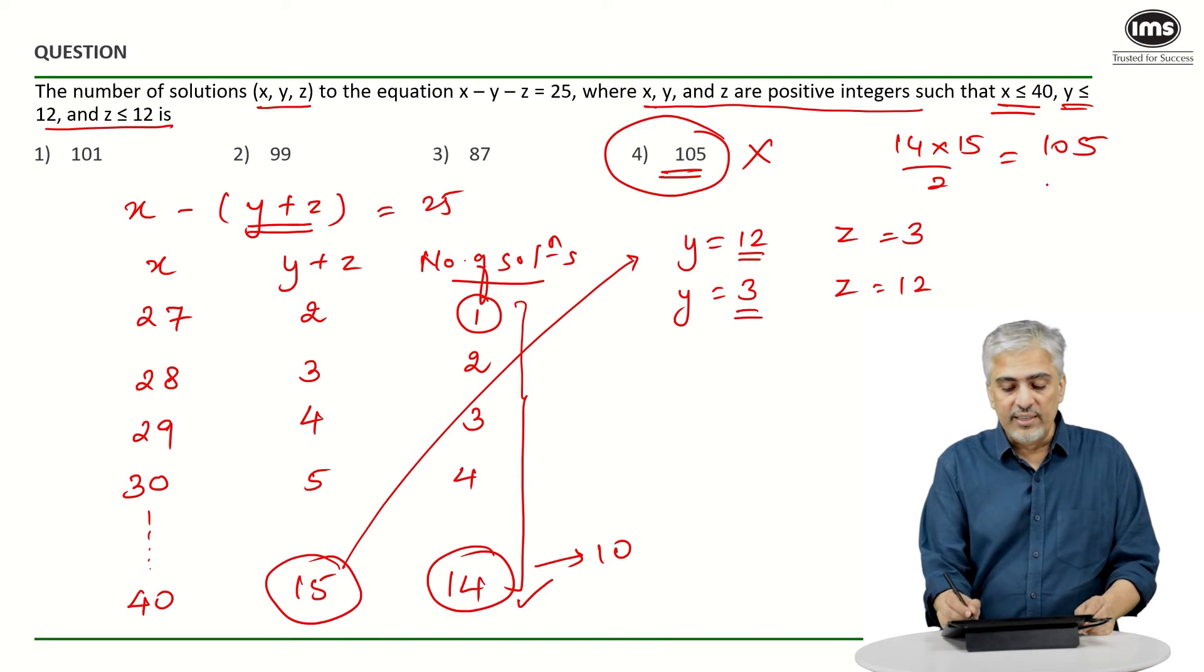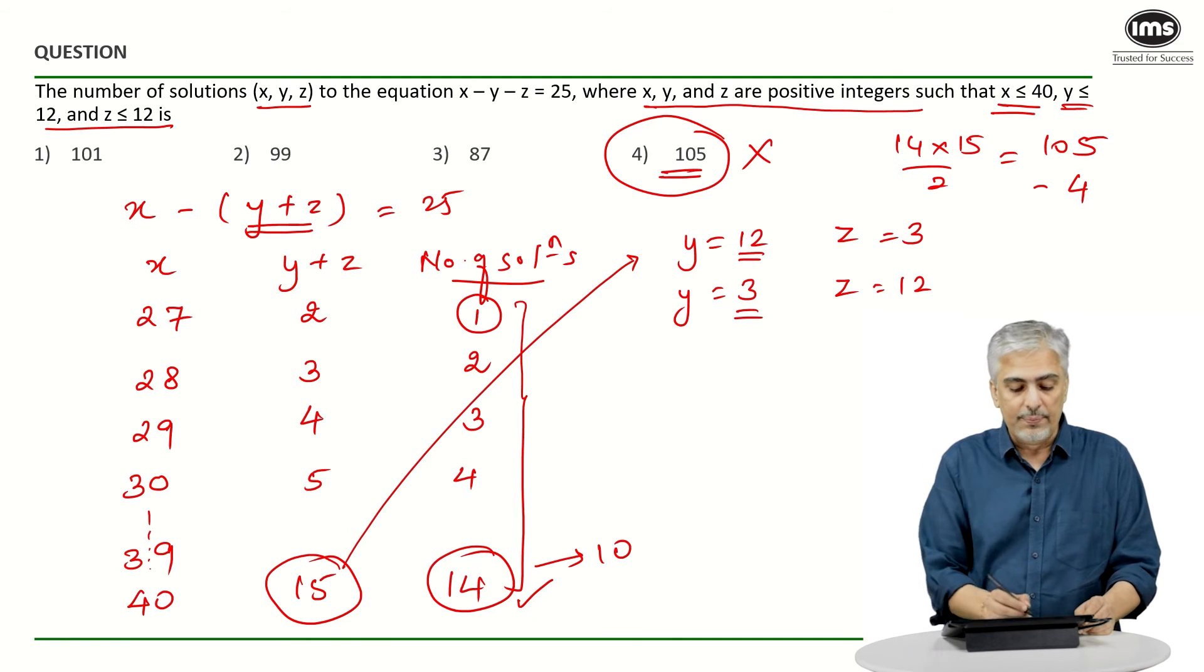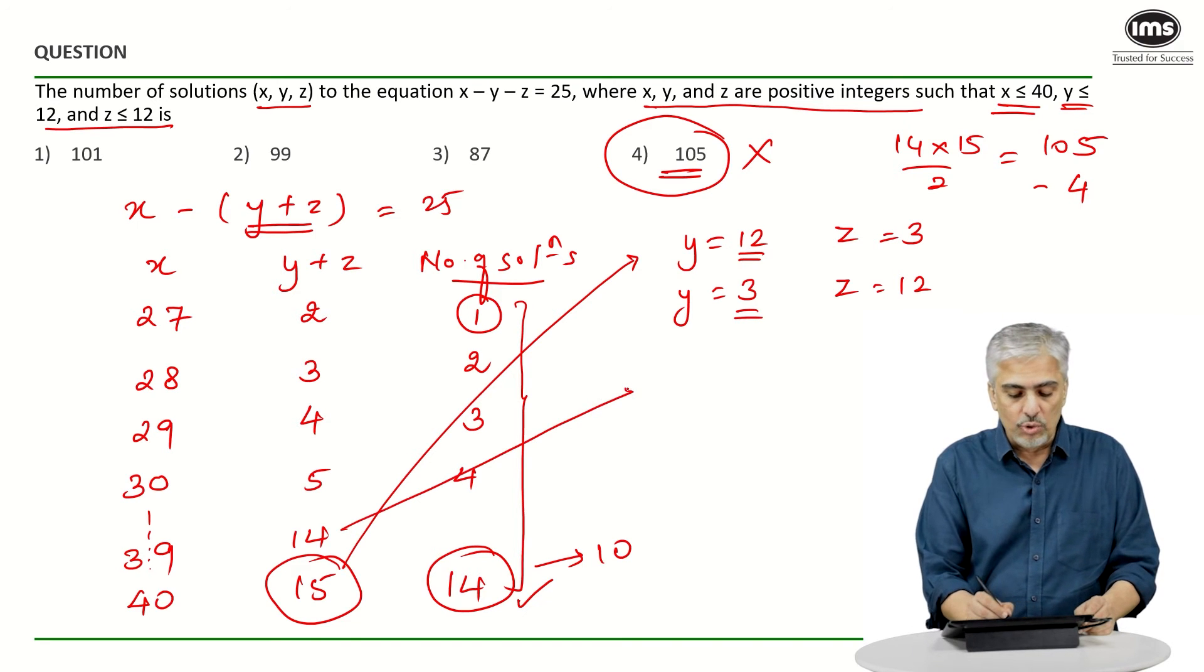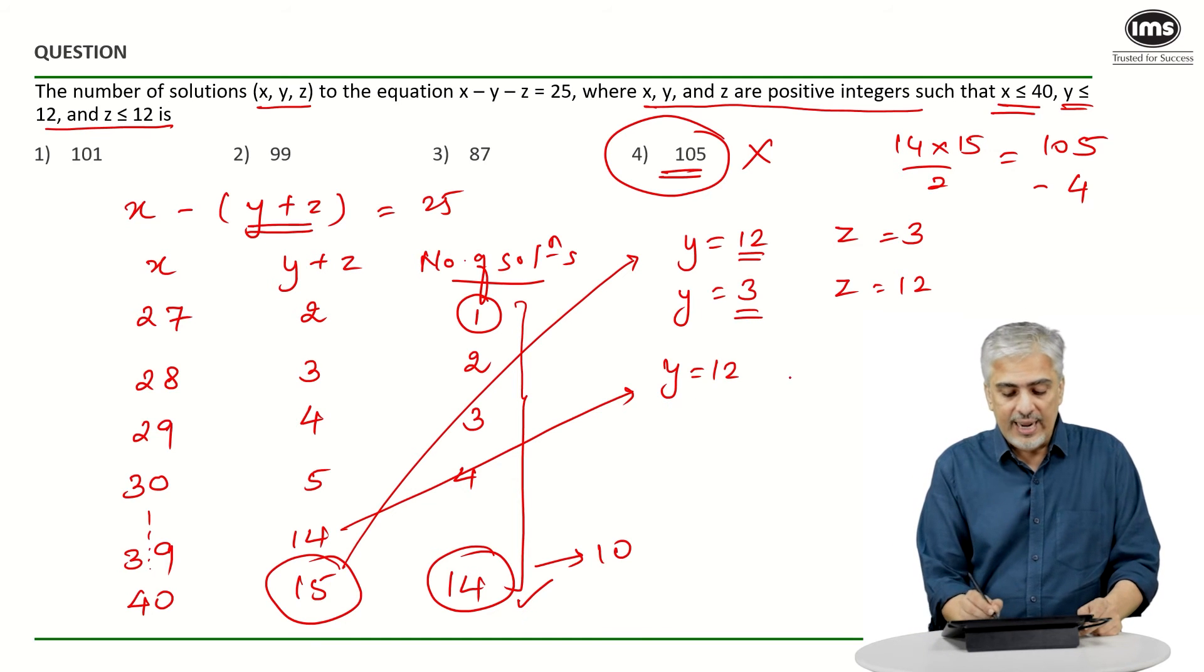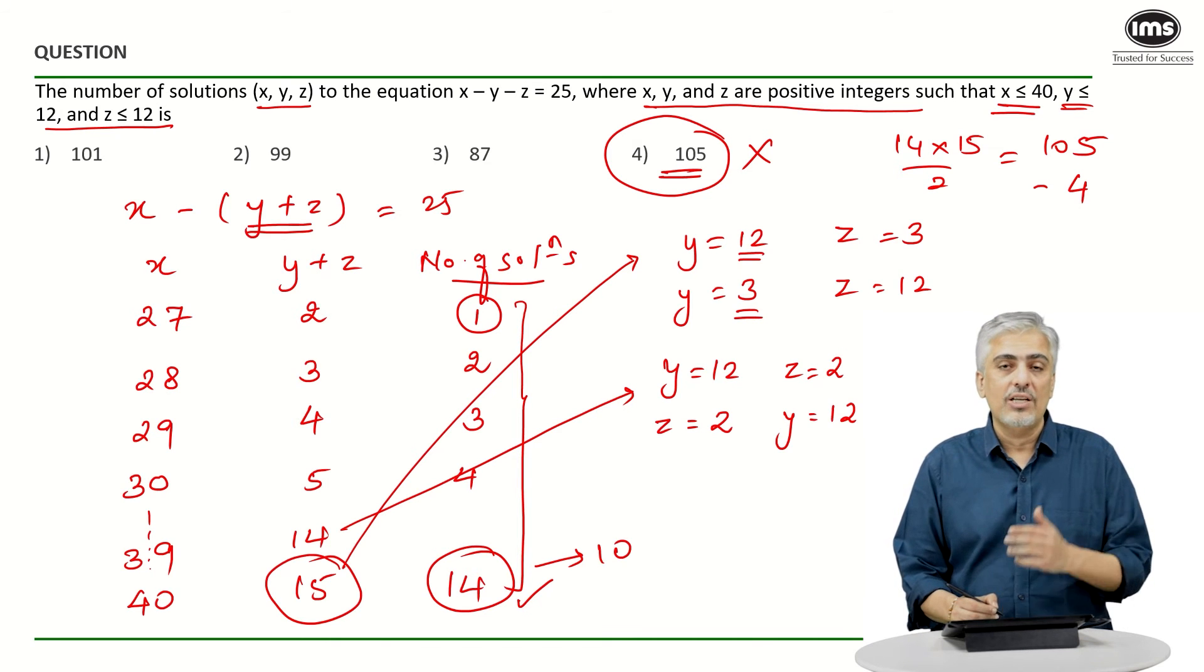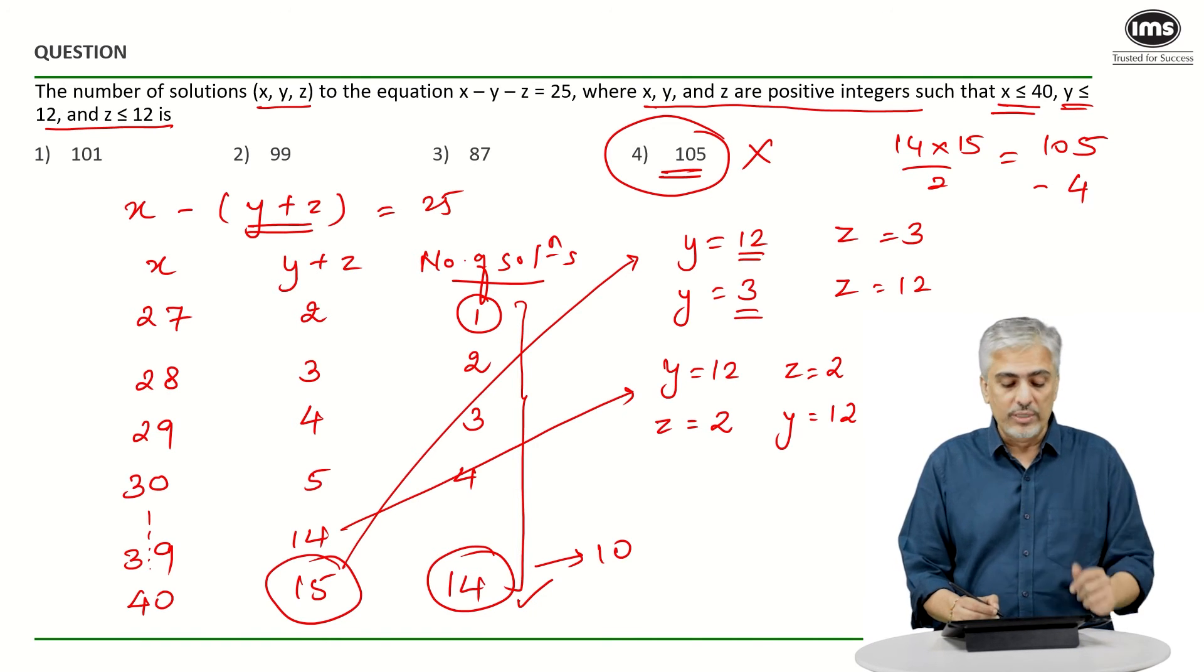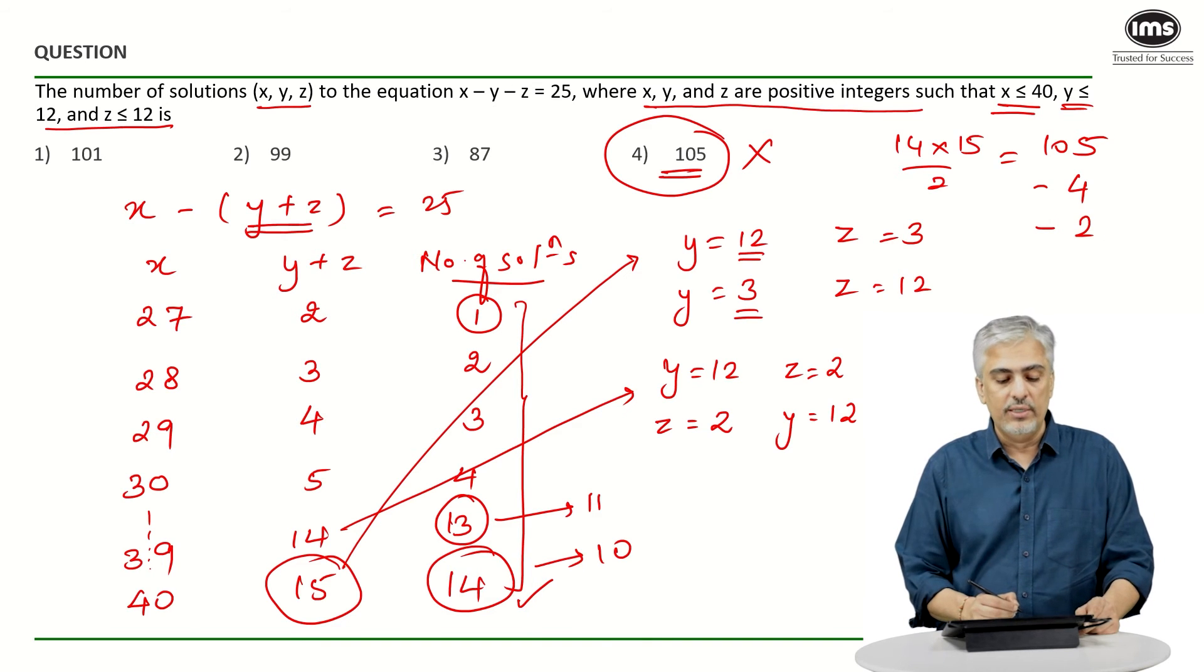So instead of having 14 solutions, we have 10 solutions. So out of the 105, I already lost 4 solutions. Let's go ahead further. Let's see what happens at 39. When x was 39, y plus z would have to be 14. Now when y plus z was 14, we would have assumed there were 13 solutions, but let's see what the actual number of solutions turn out to be. Y plus z is 14. Y can take a maximum of 12, and z would be 2. And the minimum value it can take is 2 till y is 12. So 2 to 12 would be how many solutions? Those are 11 solutions.